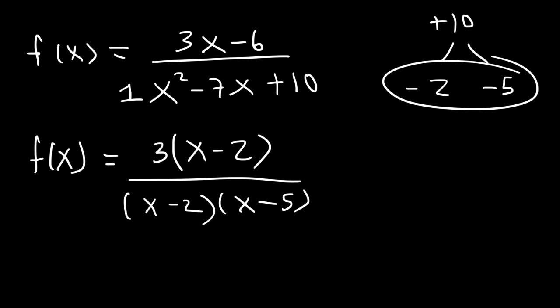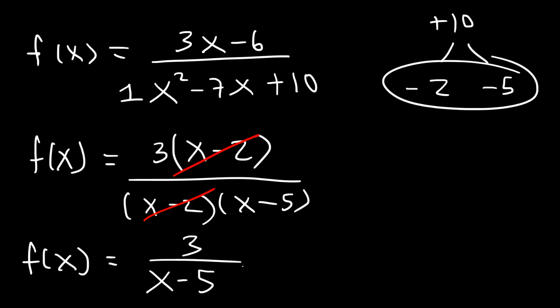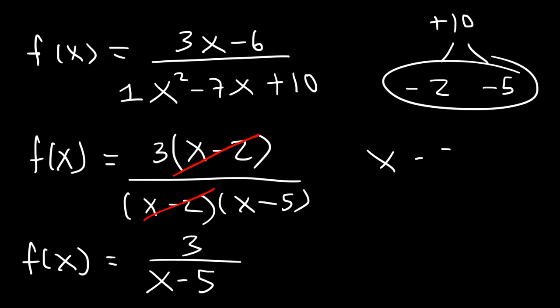Notice that we can cancel x minus 2. x equals 2 is a hole, not a vertical asymptote. So what we have remaining is 3 over x minus 5. There's no way to cancel x minus 5, so we set that equal to 0. The vertical asymptote is x equals 5.